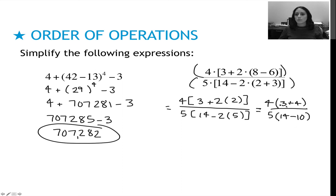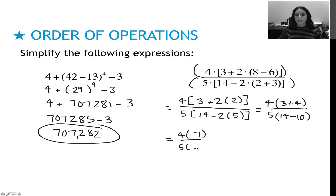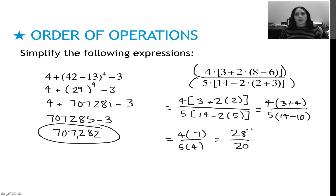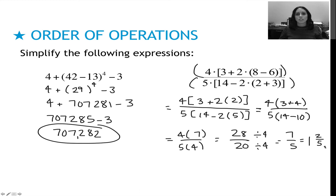On top: I have 2 times 2 to get 4, so I can't add the 3 yet. That gives 4 times the quantity 3 plus 4, which is 4 times 7. On the bottom: 2 times 5 is 10, so 5 times the quantity 14 minus 10, which is 5 times 4. Multiplying out gives 28 over 20. Since 4 divides into both, simplify to get 7 over 5, which can also be written as 1 and 2 fifths. Pay attention to what form of answer your program requires.